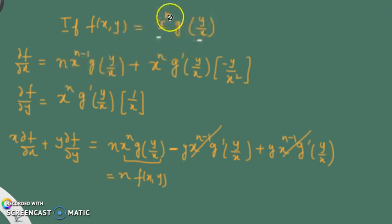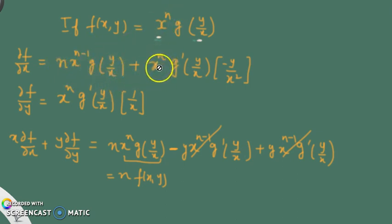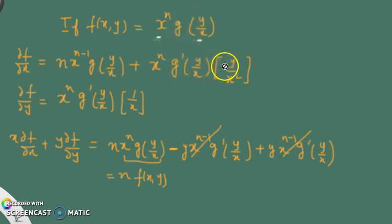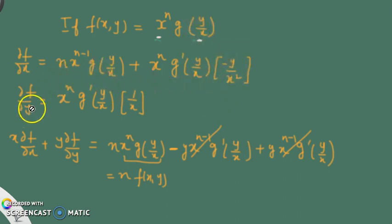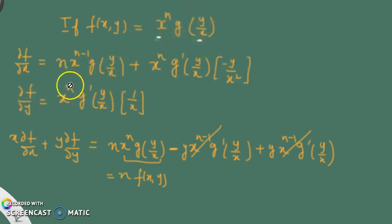First, differentiating x^n gives n times x^(n-1) with g(y/x) constant. Then x^n is constant and we apply the chain rule to g: g'(y/x) times the derivative of (y/x) with respect to x, which is minus y/x². For the partial derivative with respect to y, y appears only in g, so we get x^n times g'(y/x) times 1/x.